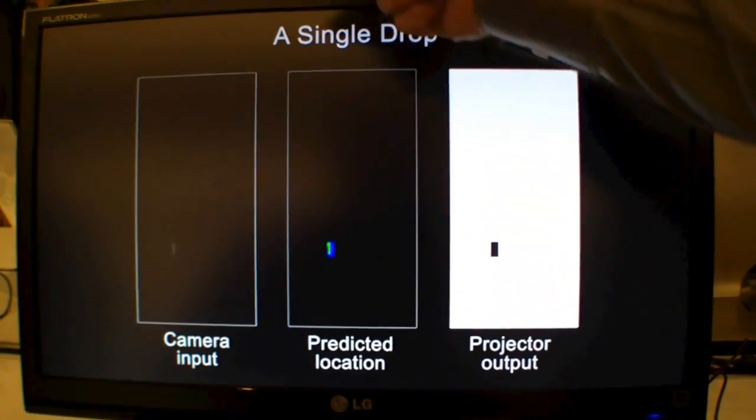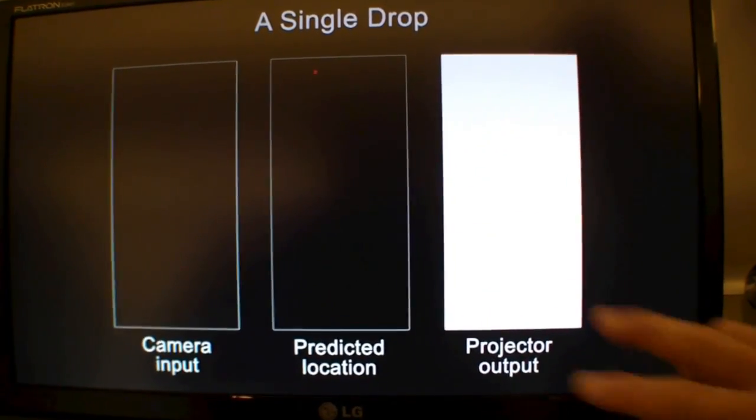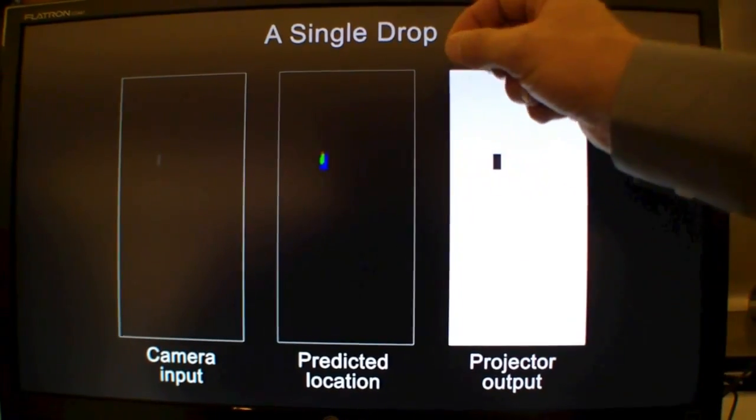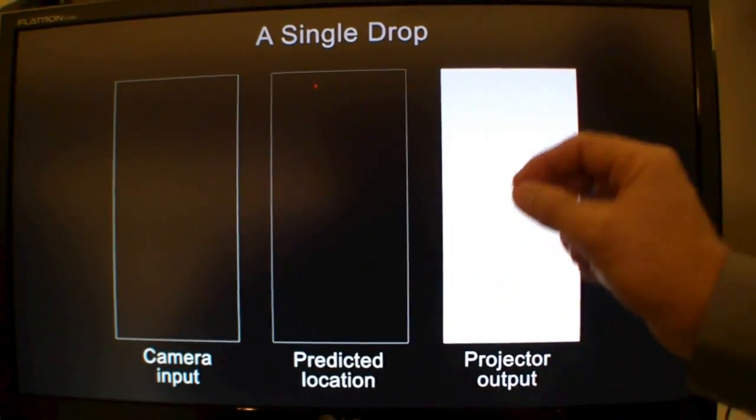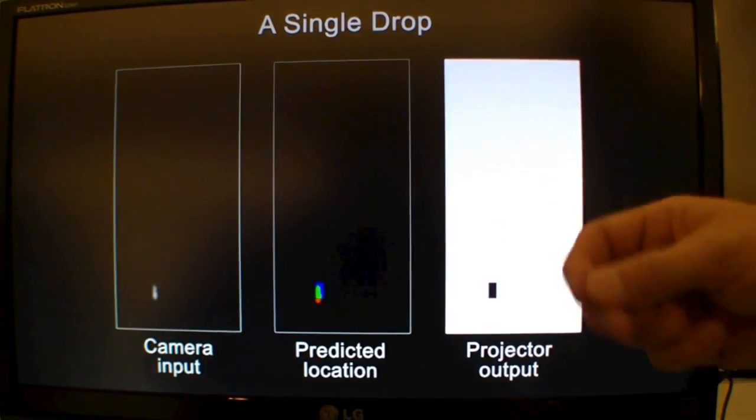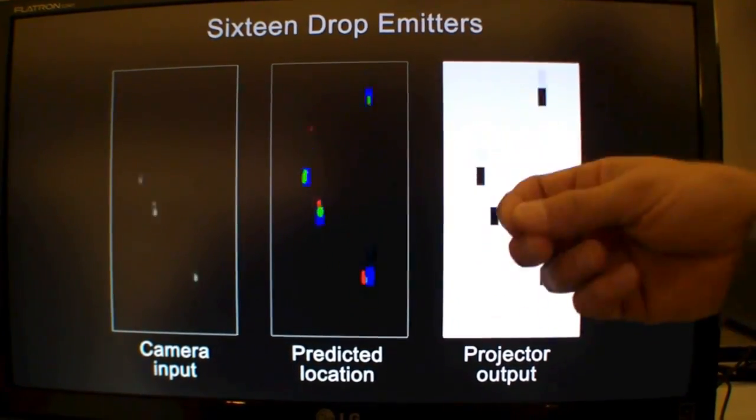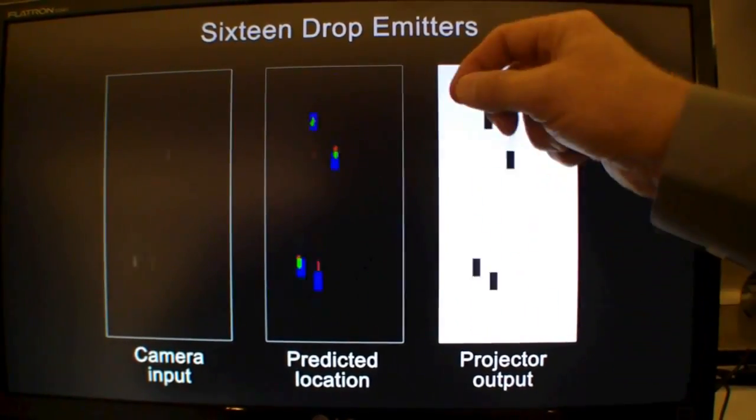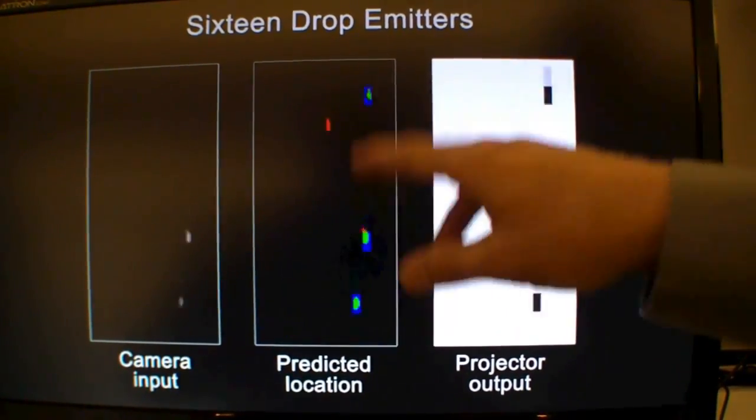The camera input is seeing the rain as it's falling through the headlight beam. The computer prediction is trying its best to create and predict that location. The green you're seeing are areas of the raindrop that we've successfully not illuminated. The red indicates areas of the raindrop that are still getting some light. And the blue represents areas that we've blacked out where there is no rain.